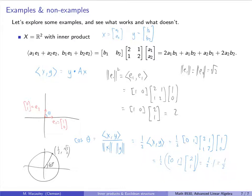So perhaps it's wrong to draw e₁ and e₂ at 90° — think of X as an abstract two-dimensional vector space where the inner product is such that these vectors are at 60°. I encourage you to explore this more: find the angle between the lines y=x and y=−x. We'll return to this example in the next lecture when we study orthogonality — two vectors are orthogonal if their inner product is zero.